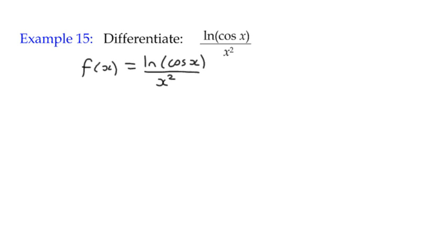It's quite clear we have a fraction involved, a rational function, which means that we need to use the quotient rule. We could use the product rule, but it's easier to use the quotient rule. If we remind ourselves of the quotient rule, it would be u' v - u v' over v squared.